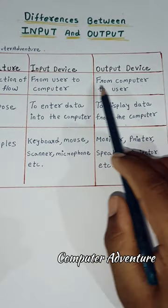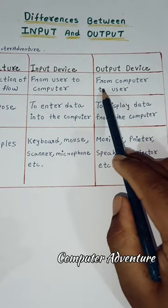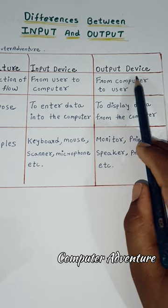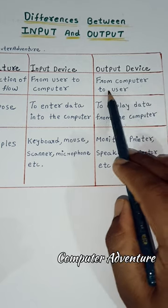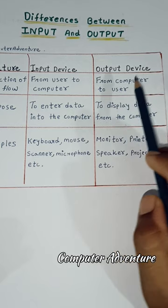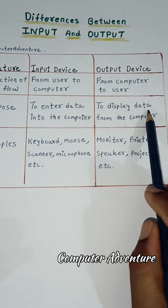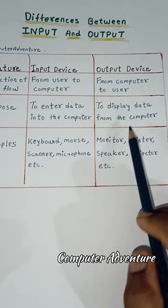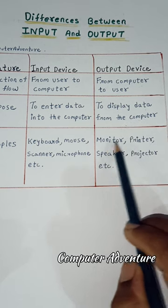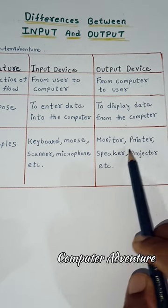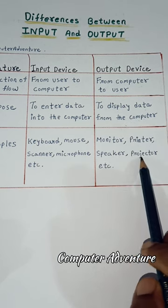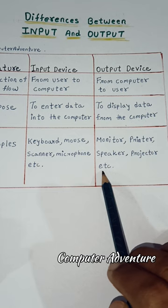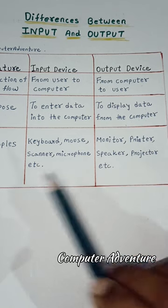Direction of data flow in output device — from computer to user. Purpose: to display data from the computer. Examples: monitor, printer, speaker, projector, etc.